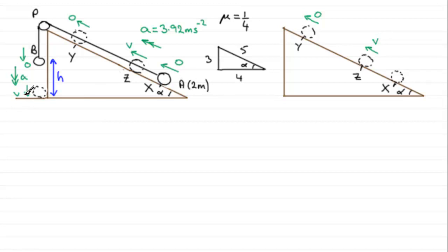Now at this point the string becomes slack and so the particle here starts with the speed V, the same as what we had here, and it's going to start to decelerate. Now that acceleration is going to be different to the acceleration from X to Z when it was under tension being pulled up the slope by B falling. We worked out in the previous part that that acceleration was 3.92 meters per second squared, but over this stretch when the string becomes slack it's going to decelerate with a different acceleration. So I'm going to call it A prime.